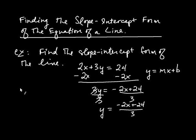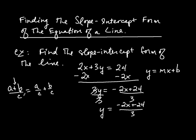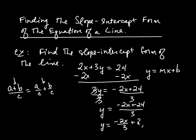We know that you can take a plus b divided by c and write that as a over c plus b over c. You can do that whenever there's addition or subtraction in the numerator — the addition or subtraction carries through. So that's what we're going to do here. There's addition, so we can split these and write y equals negative 2x over 3 plus 24 over 3.